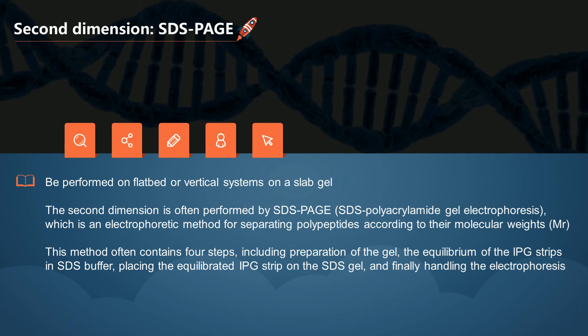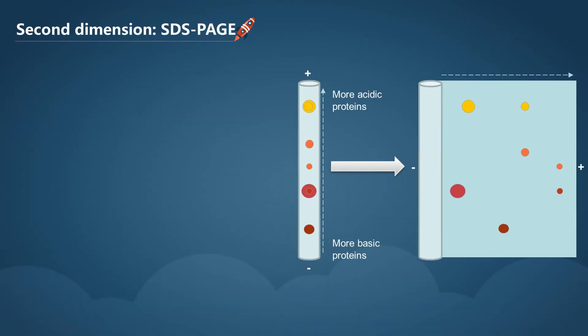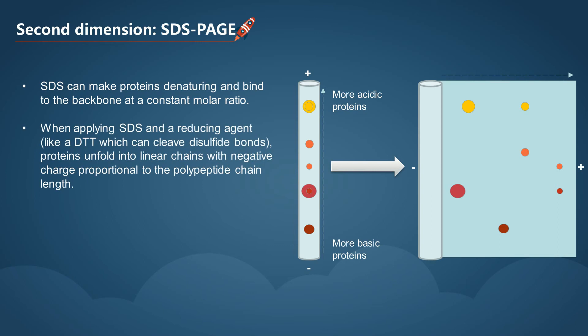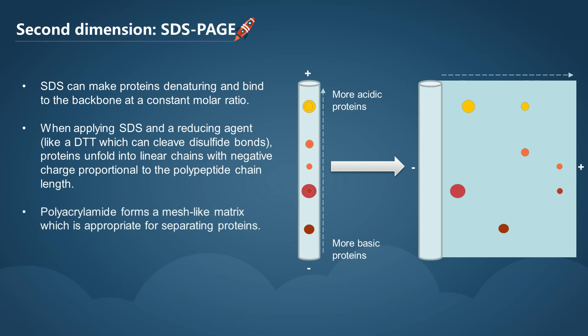SDS can make proteins denature and bind to the backbone at a constant molar ratio. When applying SDS and a reducing agent like DTT, which can cleave disulfide bonds, proteins unfold into linear chains with negative charge proportional to the polypeptide chain length. Polyacrylamide forms a mesh-like matrix which is appropriate for separating proteins. When proteins are separated by SDS-PAGE, smaller proteins migrate faster due to less resistance.